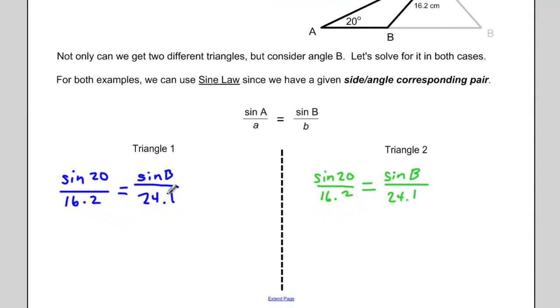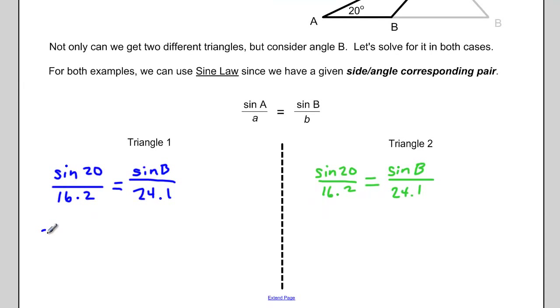So I'm going to cross multiply here, 24.1 times sine 20. And then when I cross multiply the other way, I'm going to get 16.2 times the sine of B. And then I want to isolate for sine B, so I'm going to divide both sides by 16.2. So I'll write the sine B on the left side here. So sine B, well that's just going to equal 24.1 sine 20 divided by 16.2.